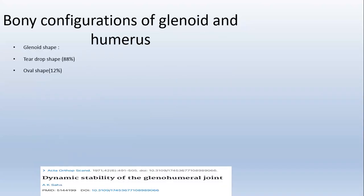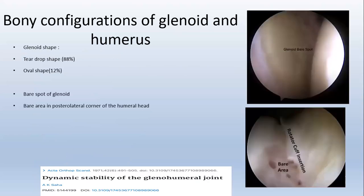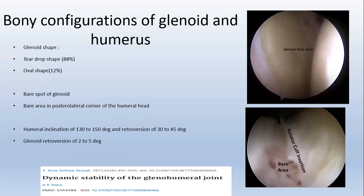The glenoid shape can be teardrop-shaped in 88% of cases and hovel-shaped in 12%. In the center of the glenoid, there is a bare spot area where the cartilage is thin. In contrast, the cartilage is thickest in the center of the humeral head, whereas the posterolateral corner of the humeral head has the bare area, which is the cartilage deficient area. Humeral inclination is about 130 to 150 degrees and retroversion is about 30 to 45 degrees. The glenoid is retroverted about 2 to 5 degrees.